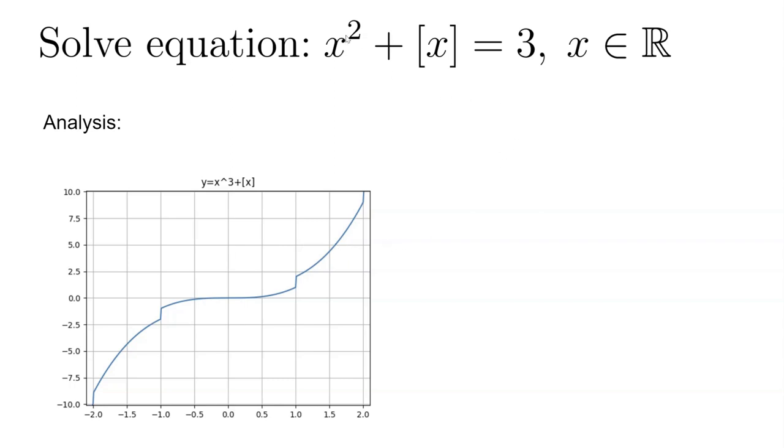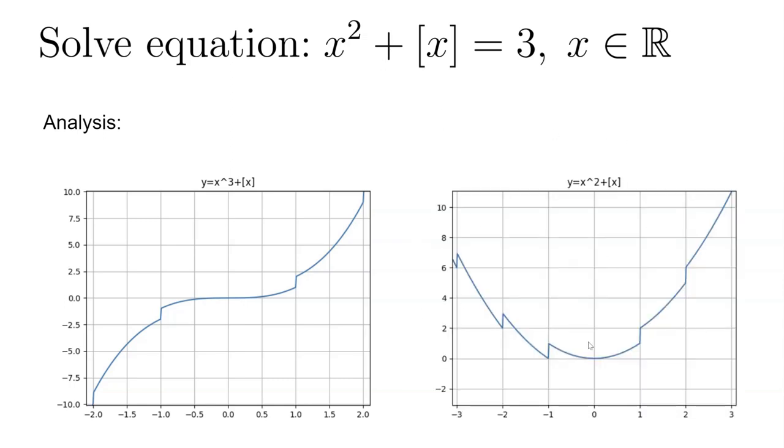All right, we can do the same for x squared plus integer part of x. Now it looks very different. First, you can view it as in two parts. One is when x is larger than zero. So it is basically x squared with jumps at any integer value of x. But when x is smaller than zero, it is no longer monotonically decreasing. You can see there's overlap in certain areas here, for example.